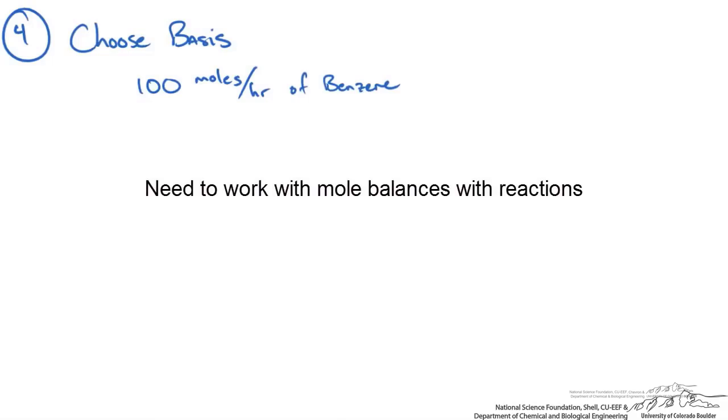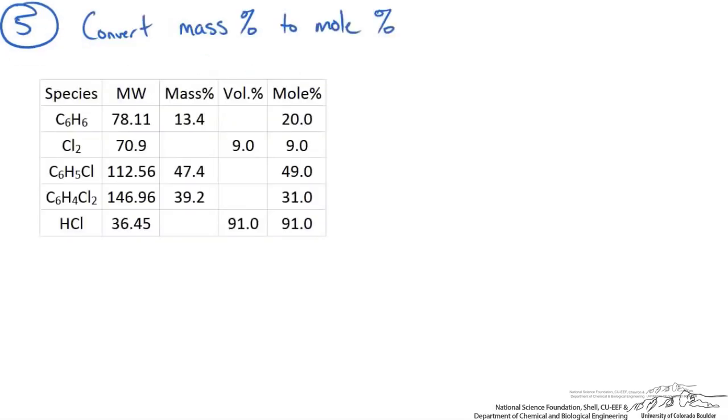Let's first determine the mole fractions of the components to use in our material balances. There are different ways to approach this—either using an average mixture molecular weight and converting using that value, or a step-by-step conversion going from our mass fraction to the amount of moles and then from the amount of moles to a mole fraction. Whatever method you choose, you should get the following values that I have written in this table. I will step you through the first one.